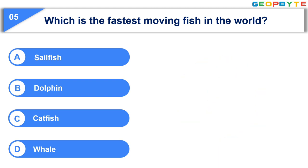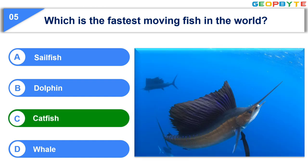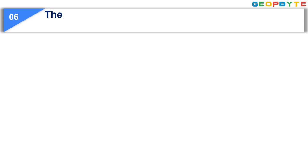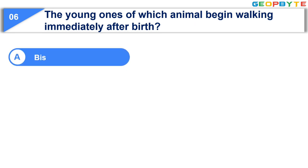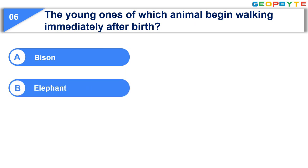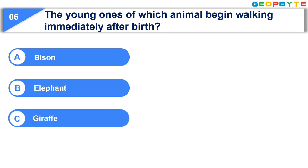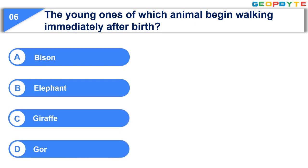Your time is up and the correct answer is Option C: Catfish. The next question is: The young ones of which animal begin walking immediately after birth? Option A: Bison. Option B: Elephant. Option C: Giraffe. Option D: Gorilla. Your time starts now!